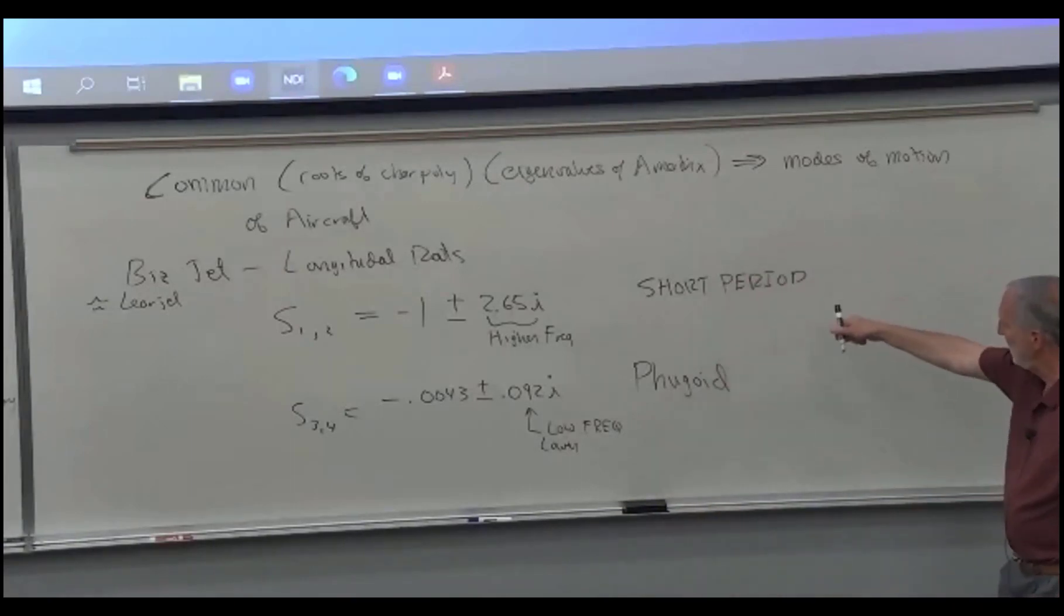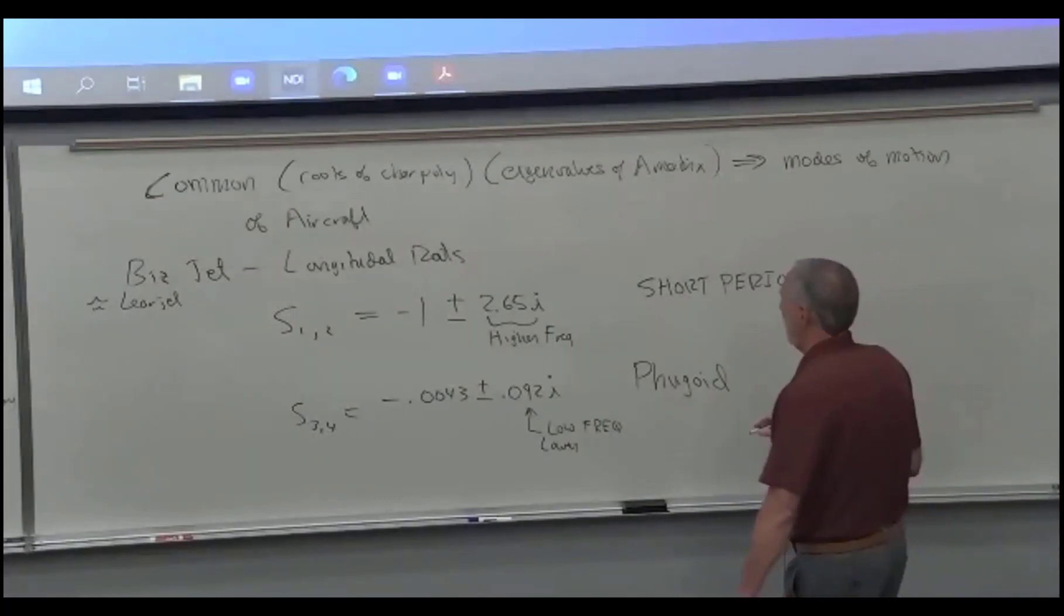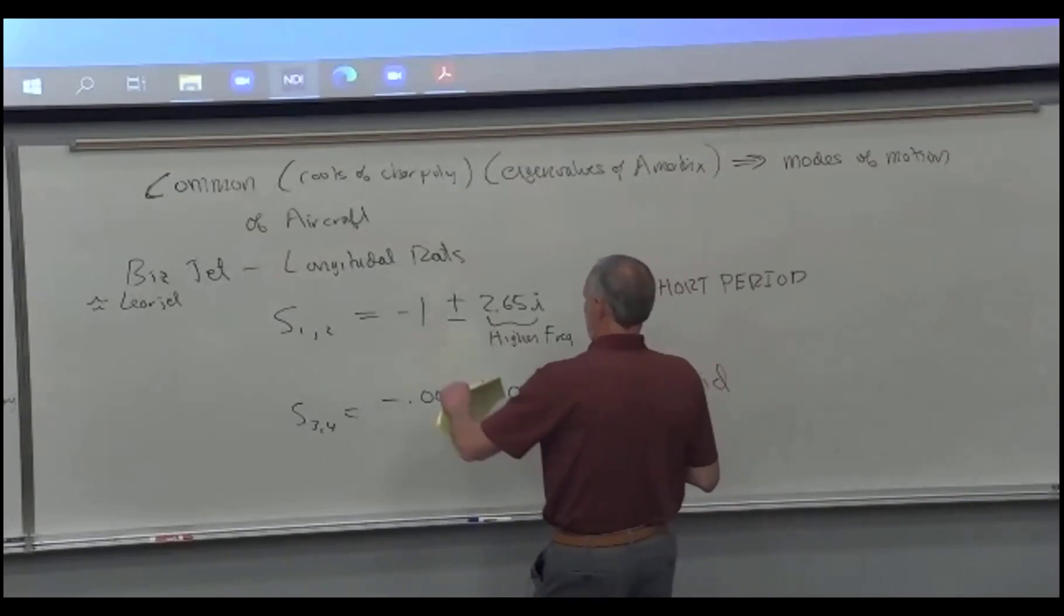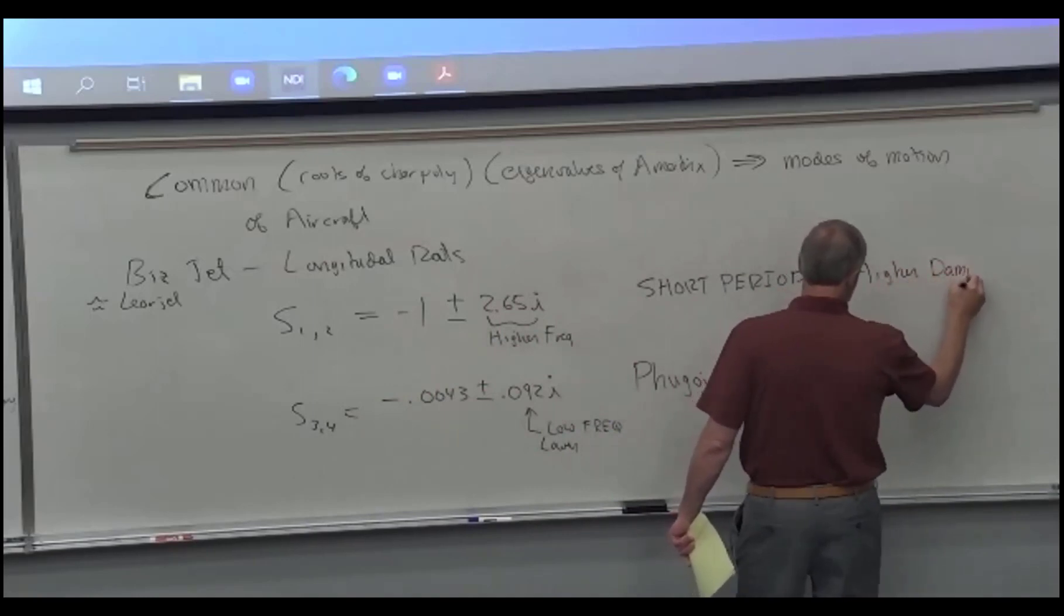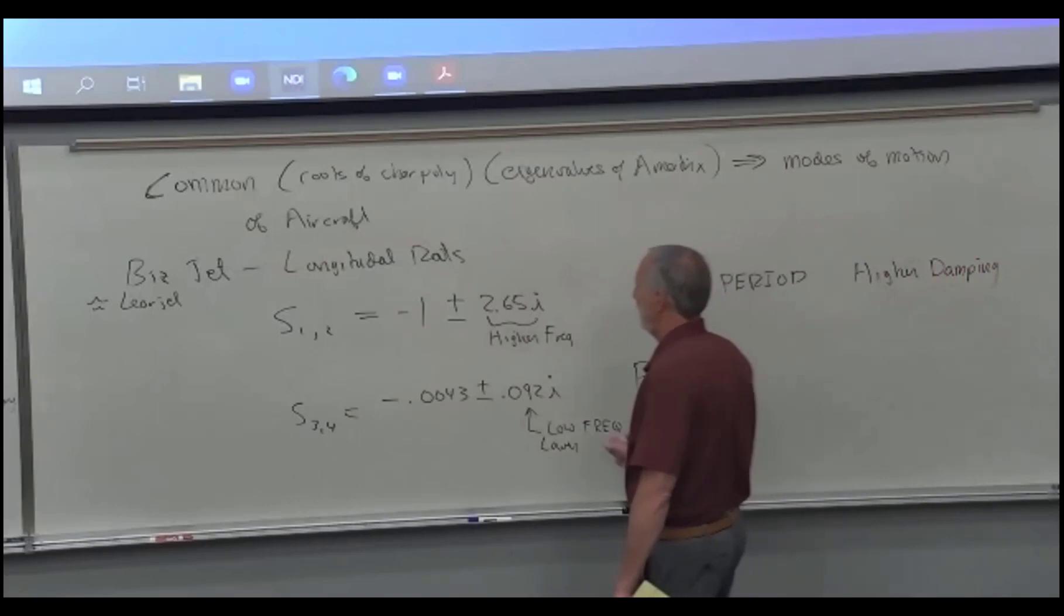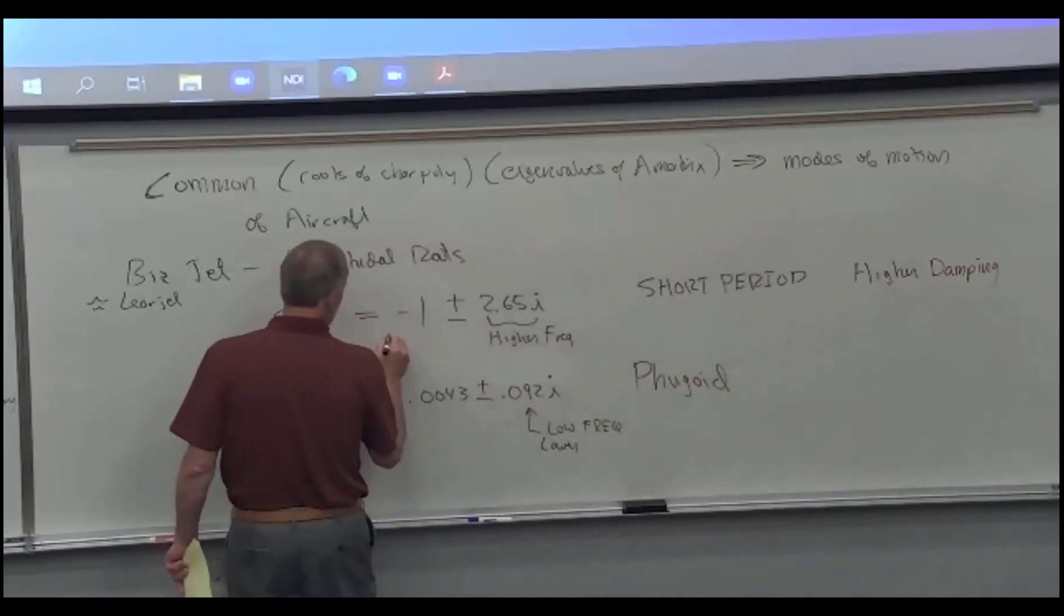That's called the short period because it's the higher frequency. This is the Fugoid because it's a lower frequency. The other way you can tell, these are complex. So you have to have complex. It also has a higher damping. Why? Because this real part here is bigger.